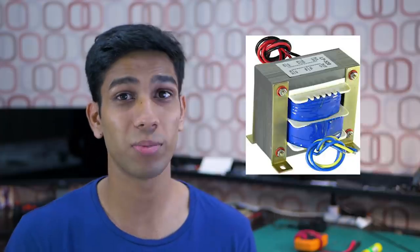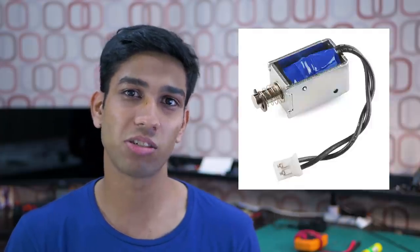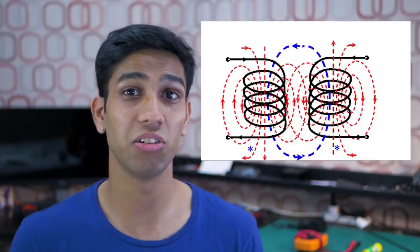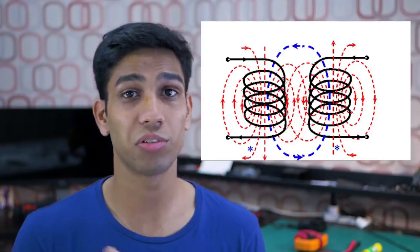Coils like these are found in a myriad of electric components ranging from transformers, relays, solenoids, electromagnets, and even motors. All these coil-based electronics, including inductors, rely on electromagnetic relationships to function.